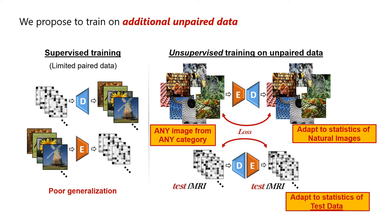Moreover, we can also cascade the encoder and decoder the other way around, imposing that unpaired fMRI samples are mapped to themselves under transformation. Our approach encourages using unpaired fMRI samples from the test data — but without using any of their corresponding images. Since those images are never used in training, it is perfectly legal to train on those test fMRI samples, which are just samples from the decoder's input space. This training configuration adapts the decoder to the statistics of your test fMRI data.